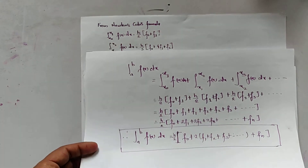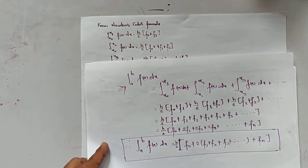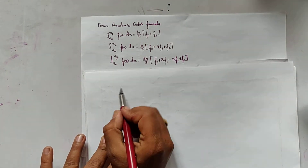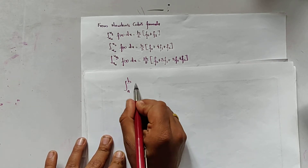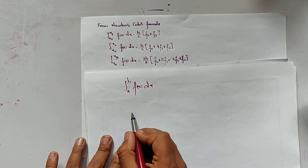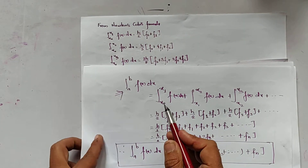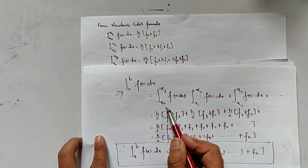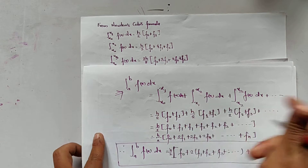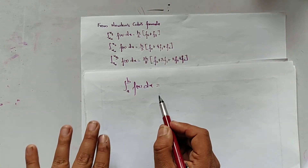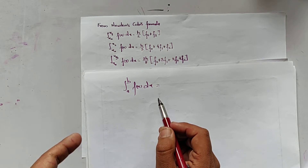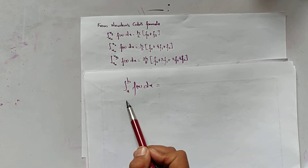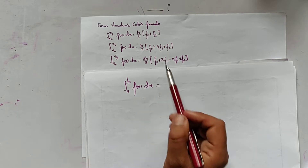Now let us use this same integral to find the formula for Simpson's rule. That is, the integral from a to b of f(x) dx. For the trapezoidal rule we used n = 1 with Newton-Cotes first formula, meaning intervals x0–x1, x1–x2, and so on. Now for Simpson's 1/3 and 3/8 rules, we divide the integration using n = 2, so each sub-interval spans two steps.